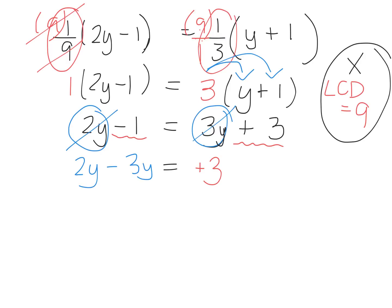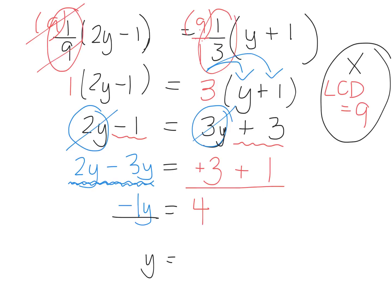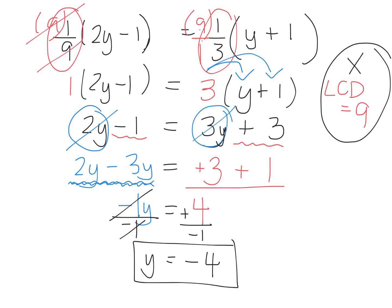What happens to negative 1? It becomes positive 1. So we figure out 2y take away 3y, which is negative 1y. And then 3 plus 1 equals 4. I need to know what y equals, so I divide both sides by negative 1. Positive 4 divided by negative 1 is negative 4 — your answer should be negative 4.